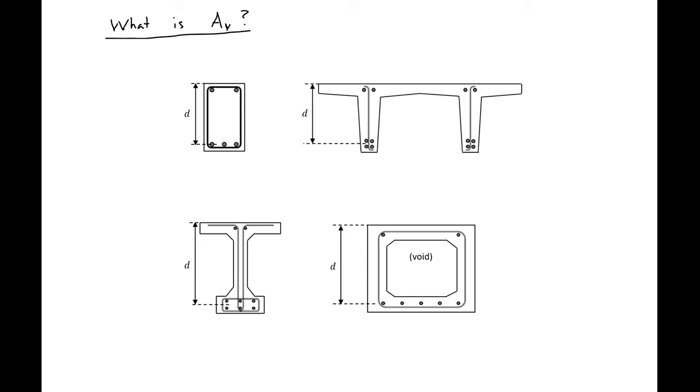We also need to be able to find the area of our shear reinforcement that will contribute to the shear strength of our section. So we can do the same thing. We can draw a line across the centroid and we can see how many legs of steel are crossing our line. In our rectangular section as shown, we have two legs of reinforcement.